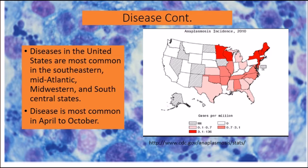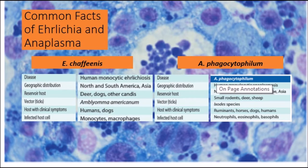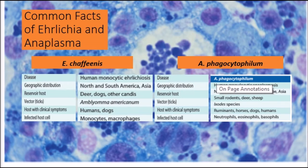There are two comparison charts here covering common facts of Ehrlichia and Anaplasma, including the diseases, reservoir hosts, and vectors. For Anaplasma phagocytophilum specifically, the disease is human granulocytic anaplasmosis, and the geographic distribution includes North and South America, Europe, and Asia.